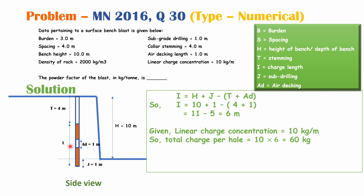The charge column length I equals bench height h plus sub-drilling j minus stemming minus air decking. So: 10 + 1 − 4 − 1 = 6 m. The linear charge concentration is given as 10 kg/m, so total charge per hole = 10 × 6 = 60 kg.